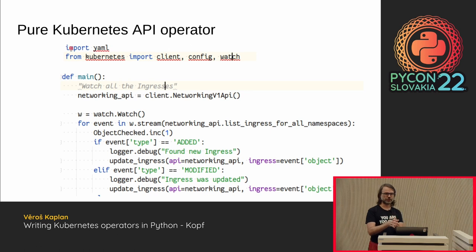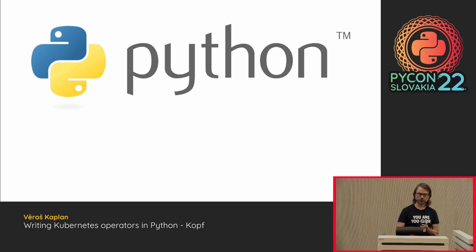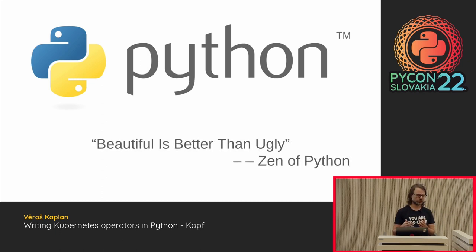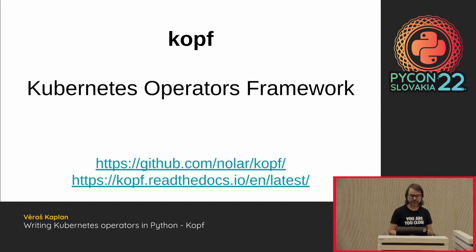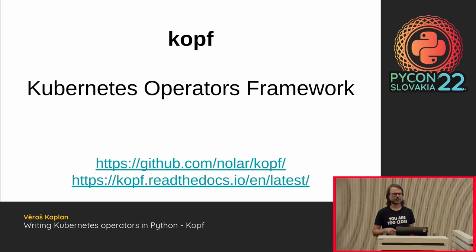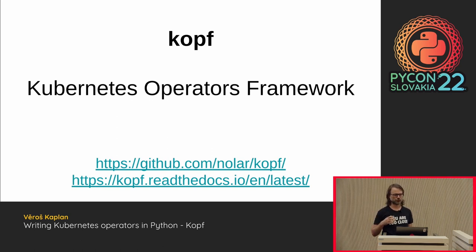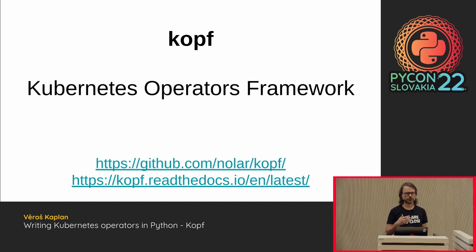We are in Python, so there must be some better way. As we know from the Zen of Python, there is a line saying 'beautiful is better than ugly.' There should be some Pythonic way to create an operator. I did some research and found there is a Python module called KOPF — Kubernetes Operators Framework. It's on GitHub, it has some documentation, it was originally created for Zalando. Currently, as far as I know, Zalando doesn't need the operator framework anymore, and the original author is working on it in his own time. KOPF provides a really nice, Pythonic way to work with operators.